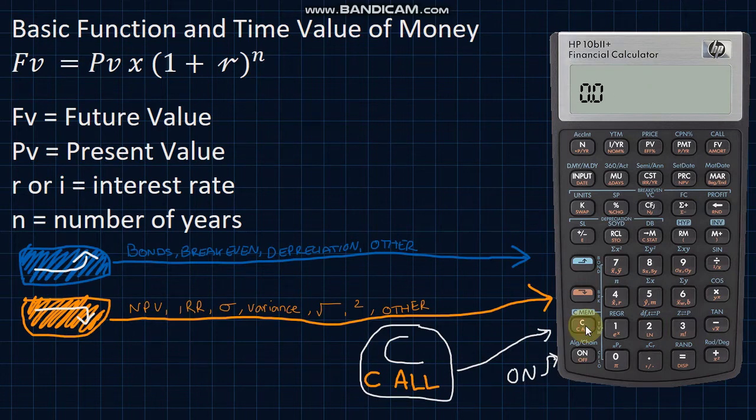For instance, if you've input values into N, R, PV or FV or any of the other input memory functions, hitting C will not clear these. They'll remain in the memory and they'll affect the applicable calculations. When starting a new calculation, I recommend clearing all memory just in case by hitting orange and C all.